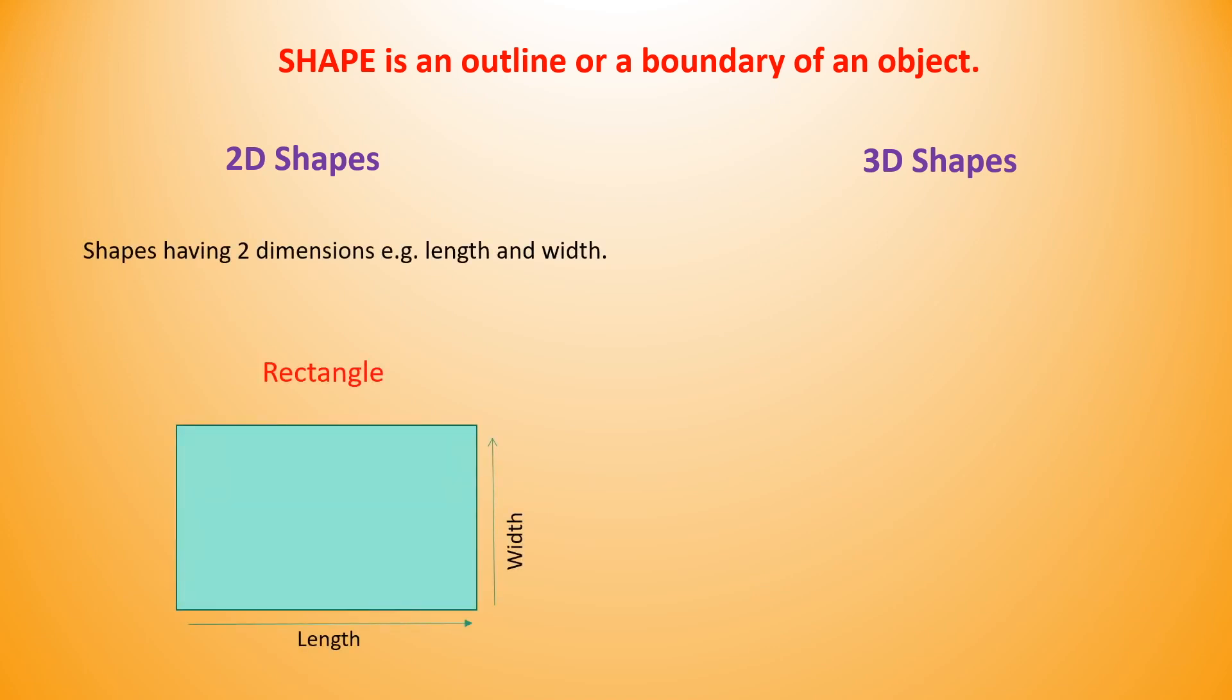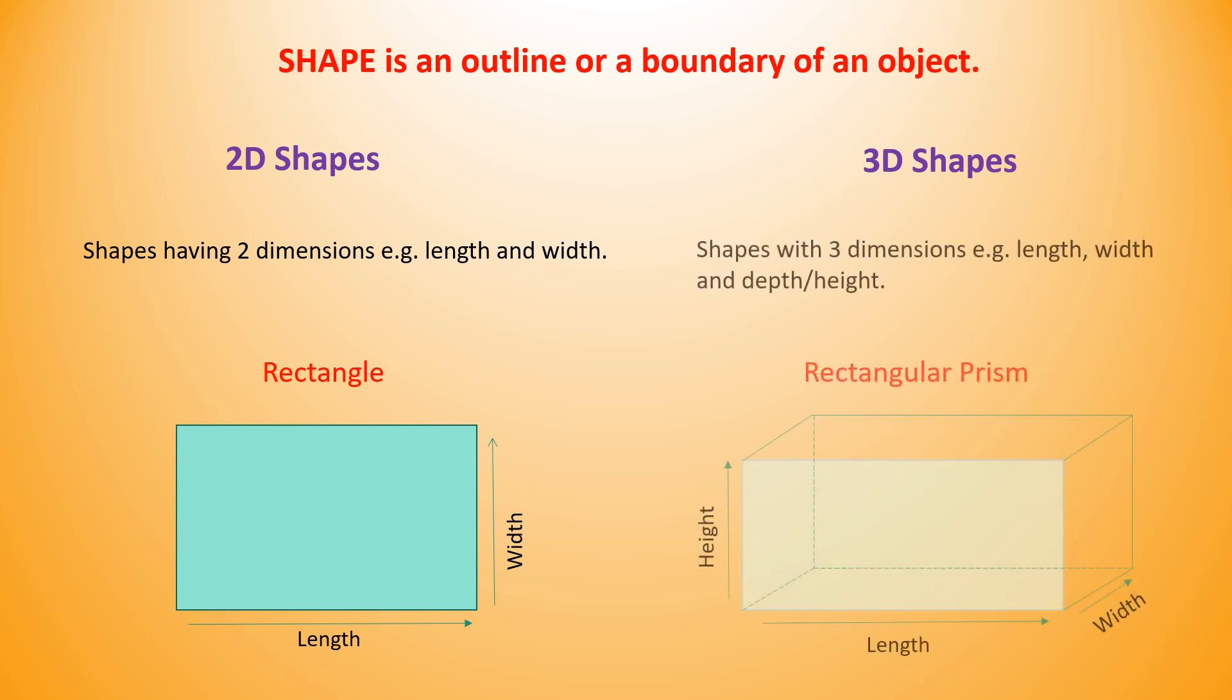Shapes having two dimensions, for example length and width, are referred as 2D shapes. Rectangle is an example of 2D shape. Shapes with three dimensions, for example length, width and depth or height, are referred as 3D shapes. Rectangular prism is an example of 3D shapes.